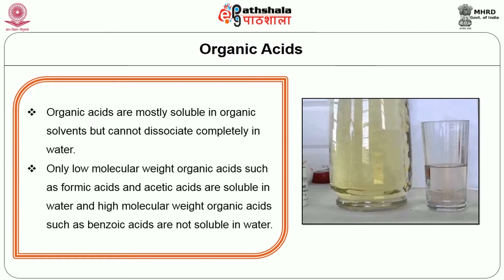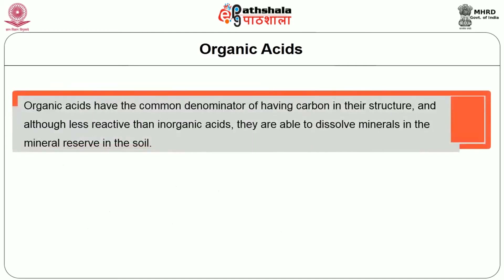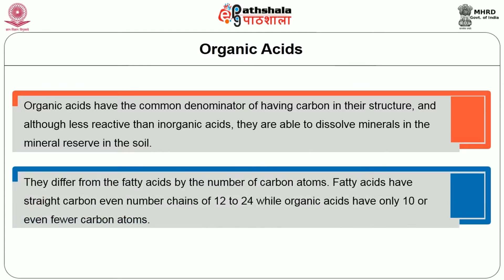Organic acids are mostly soluble in organic solvents but cannot dissociate completely in water. Only low molecular weight organic acids such as formic acid and acetic acid are soluble in water. Organic acids have the common denominator of having carbon in their structure and, although less reactive than inorganic acids, they are able to dissolve minerals in the mineral reserve in the soil. They differ from fatty acids by the number of carbon atoms. Fatty acids have straight carbon chains with an even number of 12 to 24 carbon atoms, while organic acids have only 10 or even fewer carbon atoms.